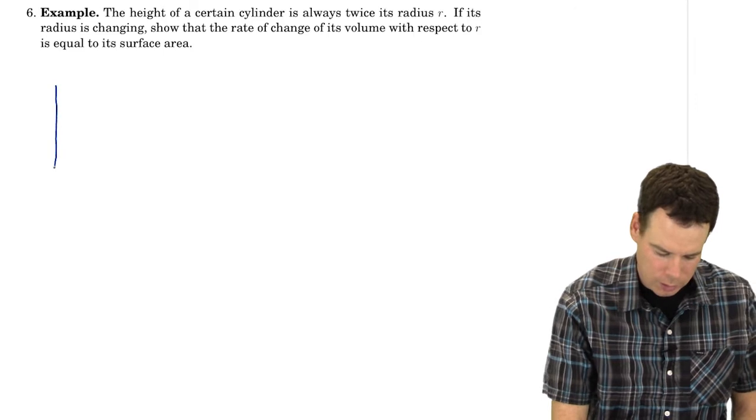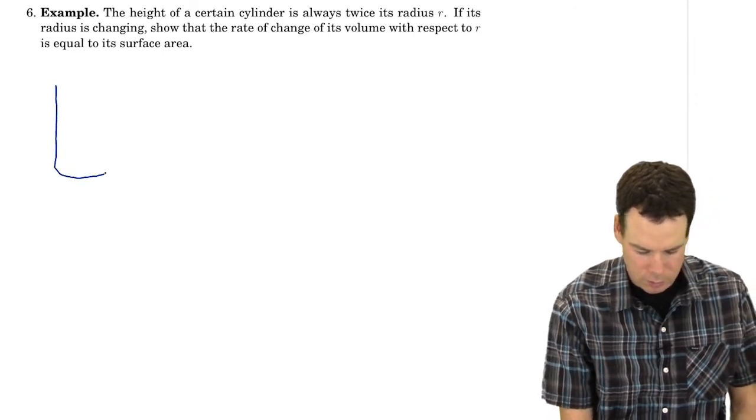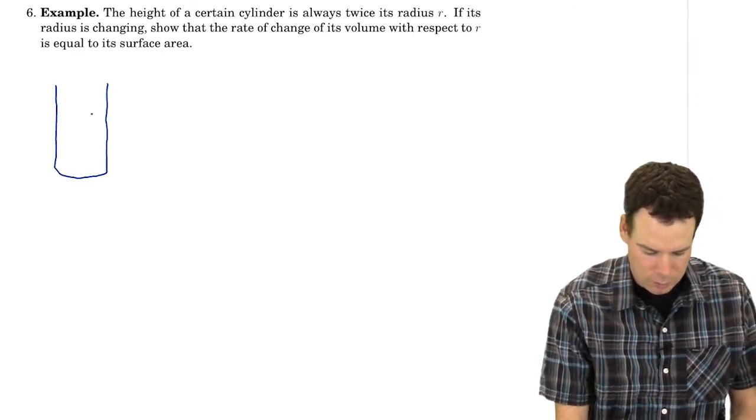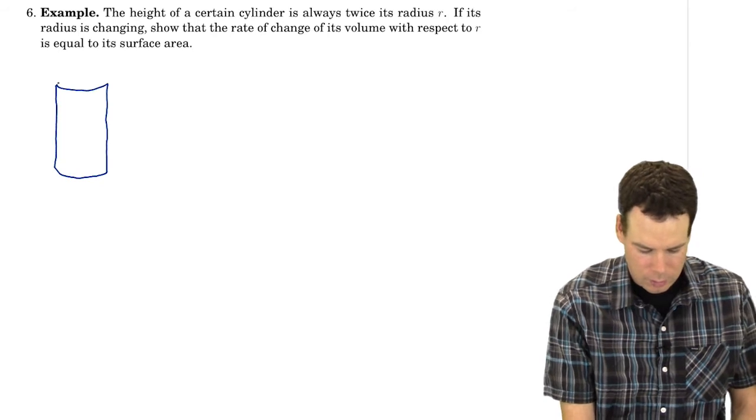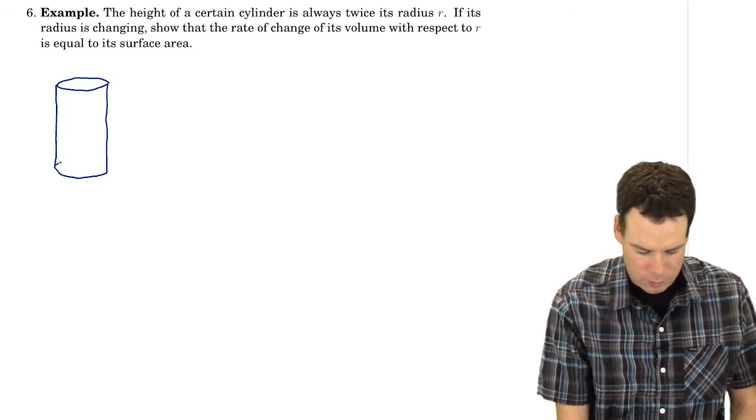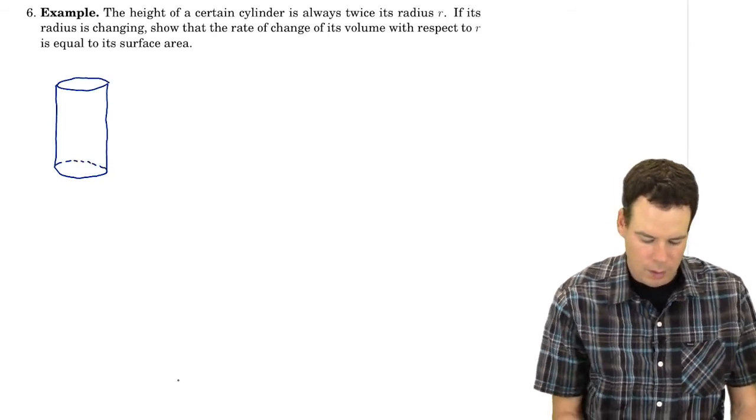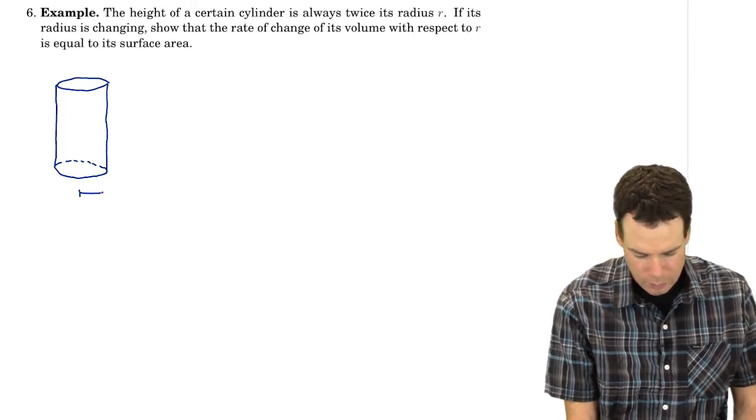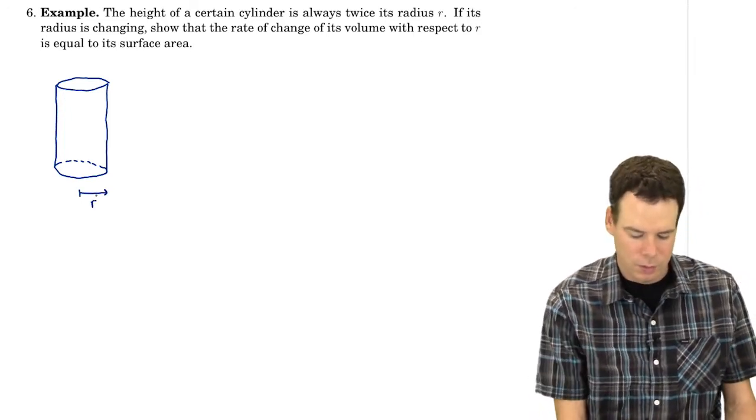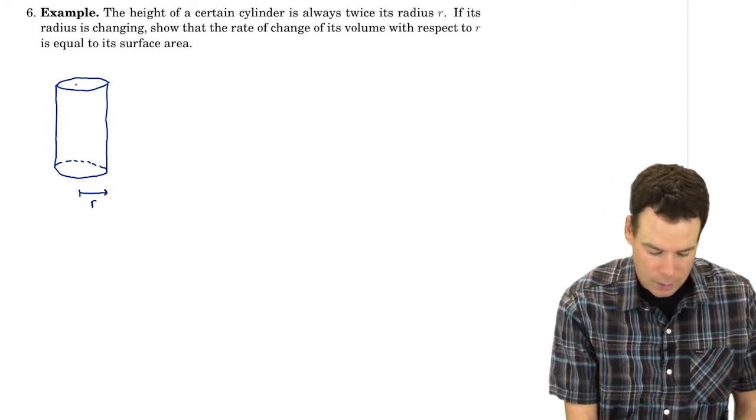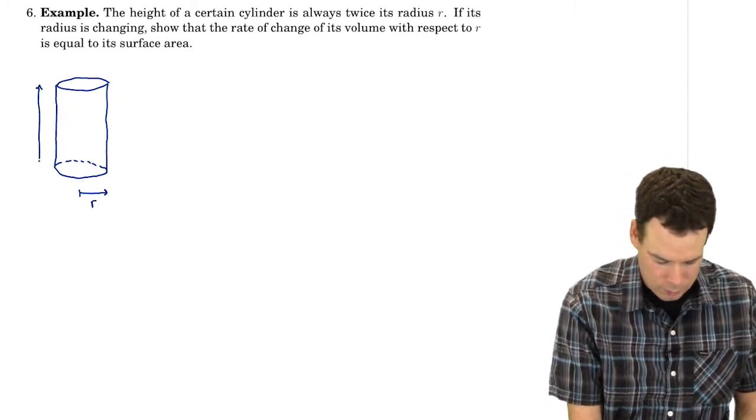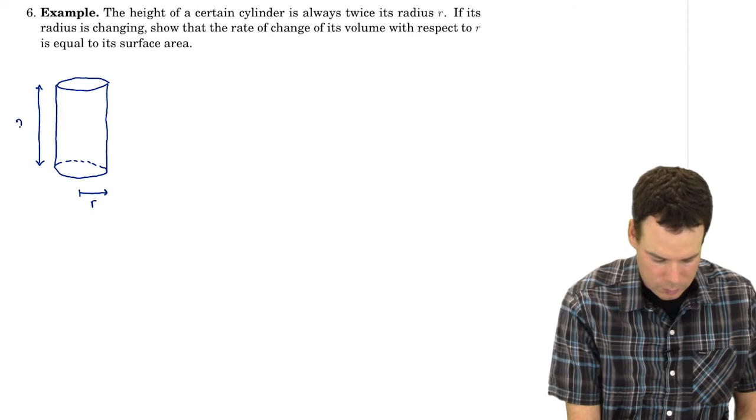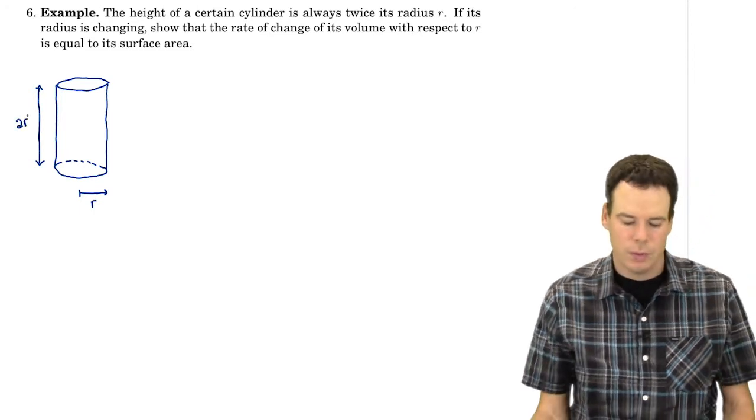We're looking at a circular cylinder where if the base radius or the radius of the circular cross-section is R, then the height is twice the radius.